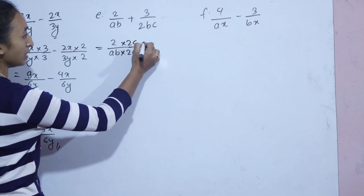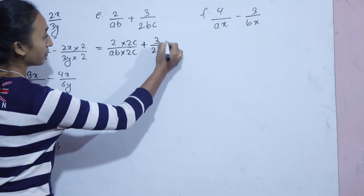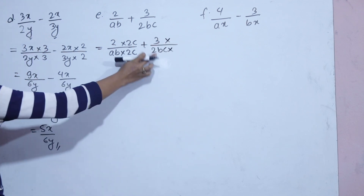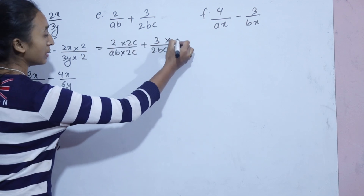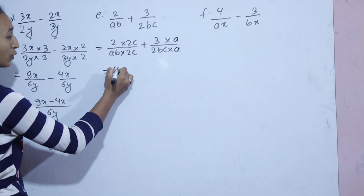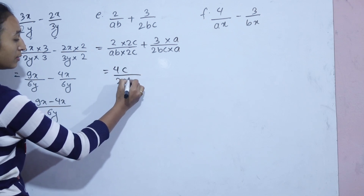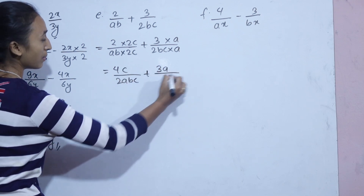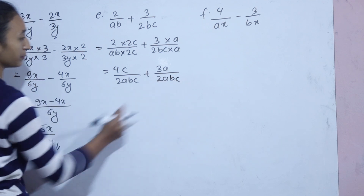Next sub-question: 2c plus 3 by 2bc. We need to make the denominators the same. The common denominator is 2abc, so we get 4c by 2abc plus 3A by 2abc.